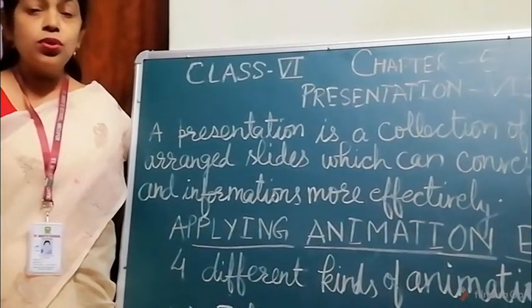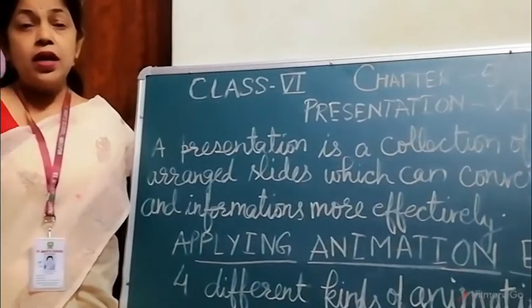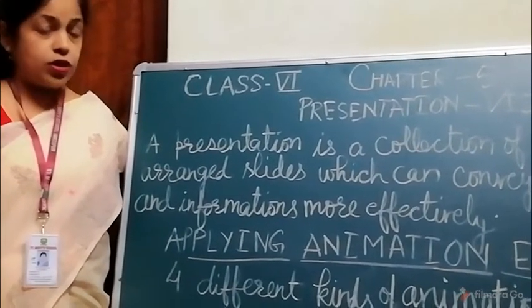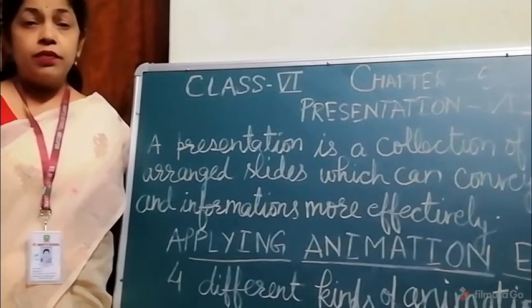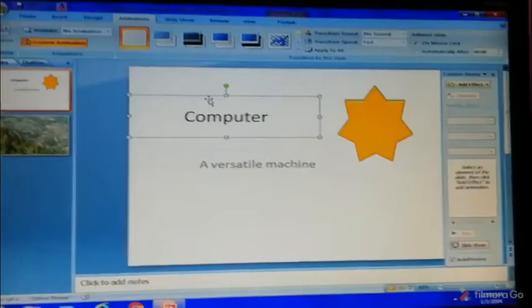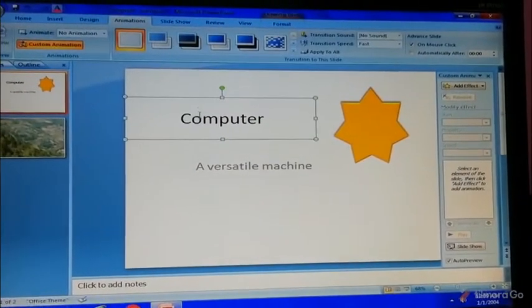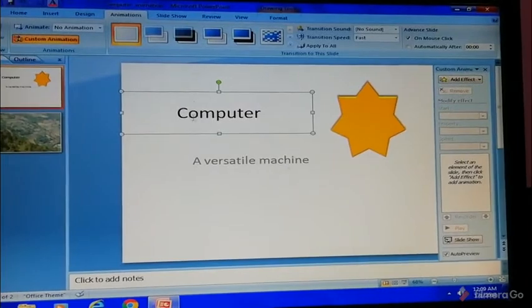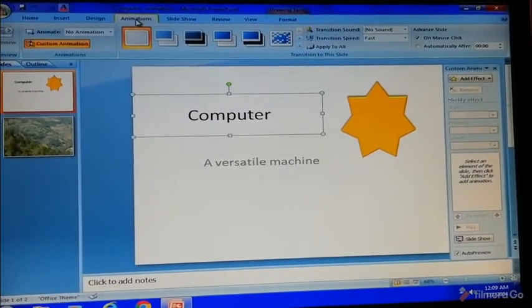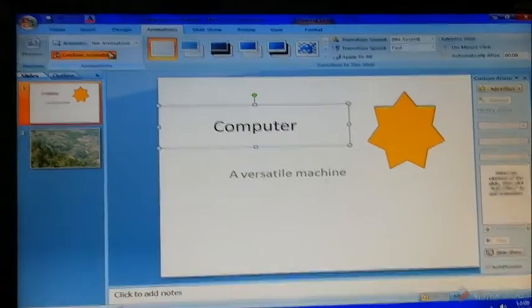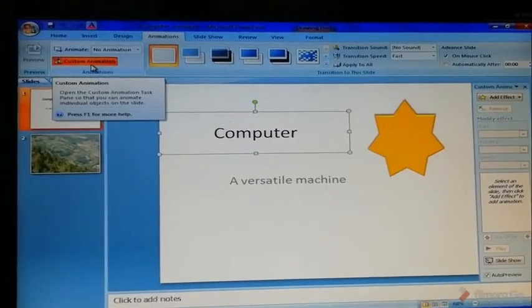Now I will show you how we can apply animation effects on any object of the slide with the help of computer. Select the first object, then click on the Animations tab, then Custom Animation.